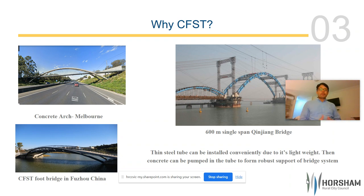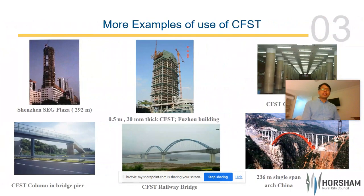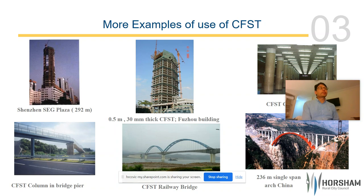Because of this fascinating advantage of CFST, it has been used not only in arches but also in many other types of structures where compression is the predominant force. For example, this is a plaza in Zhenjiang, and this is a building in China. This is a subway built with CFST in China, and it's also used for bridge piers and railway bridges, where vibration and deformation are critical. A 236-meter single-span bridge has been built in a mountainous area using this technique.